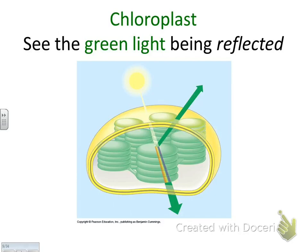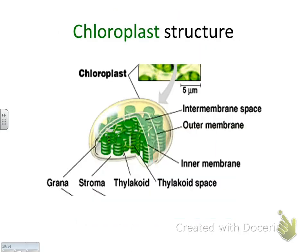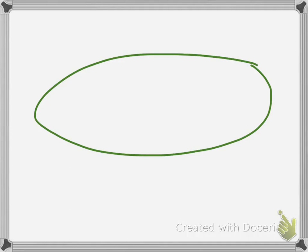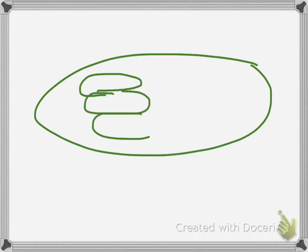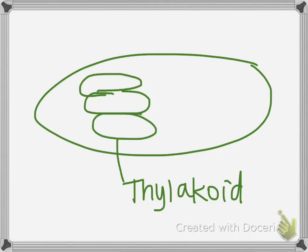Here's the chloroplast — let's actually draw it together. The chloroplast has a phospholipid bilayer on the inside, and it's shaped in cookies or stacks of cookies. One cookie is called a thylakoid. A whole stack of cookies is called a granum.